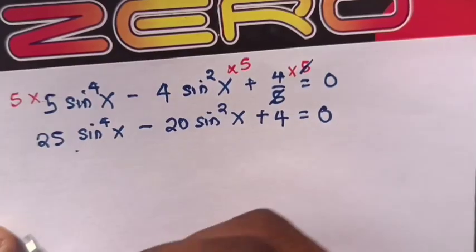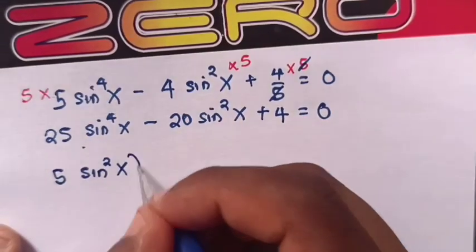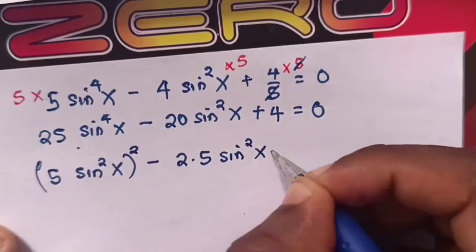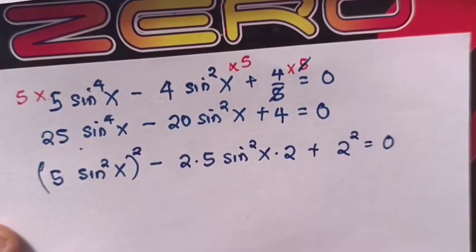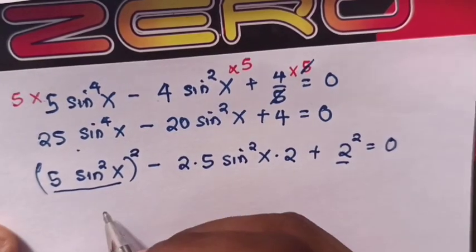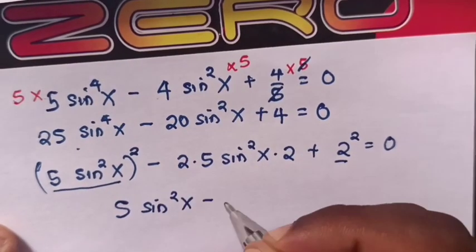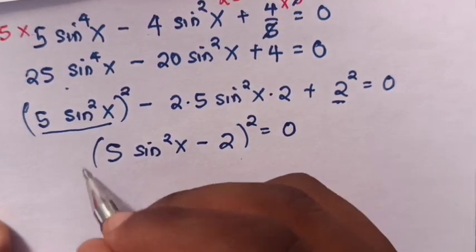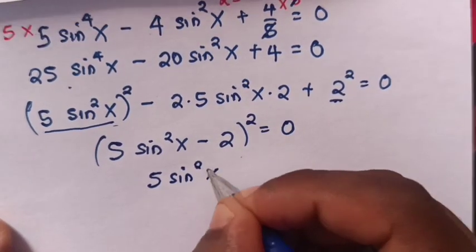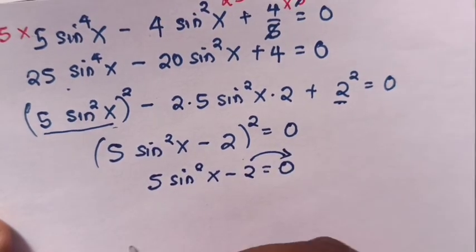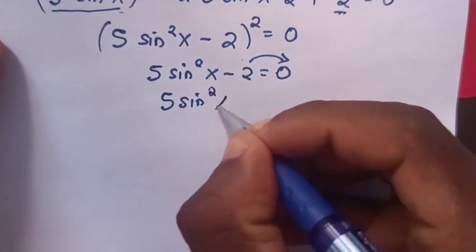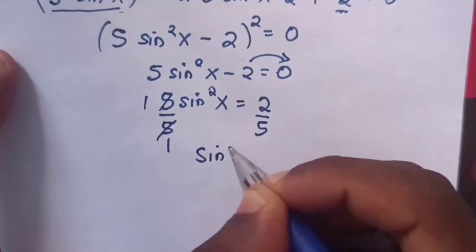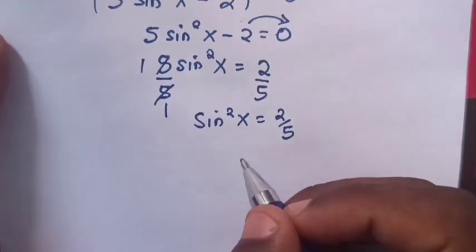This is a perfect square: (5sin²x)² - 2·(5sin²x)·2 + 2² = 0, which factors as (5sin²x - 2)² = 0. Applying the square root on both sides gives 5sin²x - 2 = 0, so 5sin²x = 2. Dividing by 5, sin²x = 2/5.